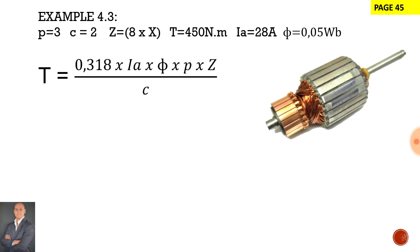To calculate the total number of armature conductors, it will be the number of conductors multiplied by the number of slots. Now to calculate this unknown factor which is the total number of conductors, we are given a torque of 450 newton meters, an armature current of 28 amps, and a flux per pole of 0.05 Weber.